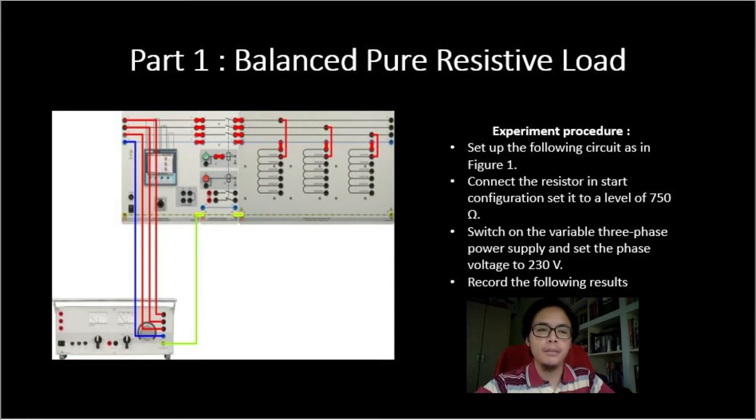Assalamualaikum, hi, my name is Muhammad Salauddin. The part 1 is balanced pure resistive load. The first experiment procedure is set up the following circuit as in Figure 1. Connect the resistor in star configuration and set it to a level of 750 ohms.